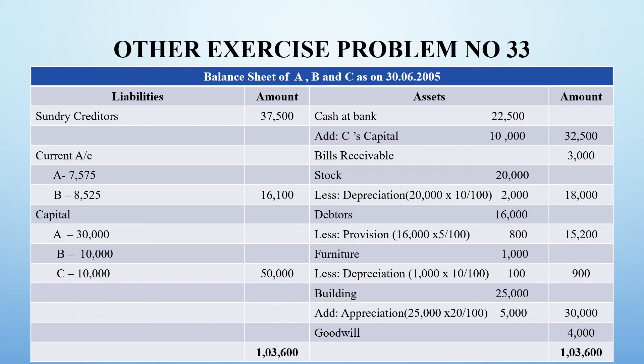The grand total on the liability side is 1,03,600 rupees. On the asset side: cash at bank is 22,500 plus C's capital 10,000 = 32,500 rupees. Bills receivable unchanged at 3,000. Stock depreciated 10% so actual value is 18,000 rupees. Debtors less 5% provision gives 15,200 rupees. Furniture depreciated 10% gives 900 rupees. Building increased by 20% from 25,000 gives 30,000 rupees. Goodwill is 4,000. Grand total is 1,03,600 rupees.